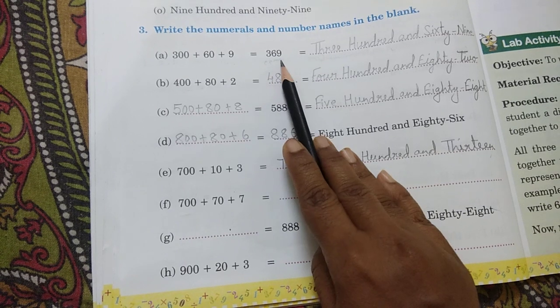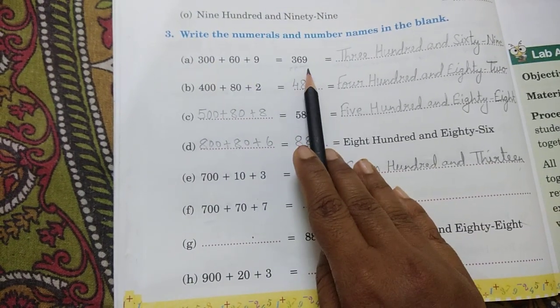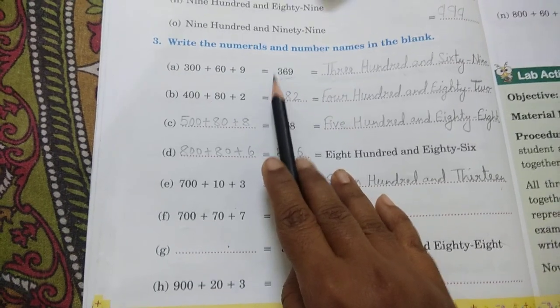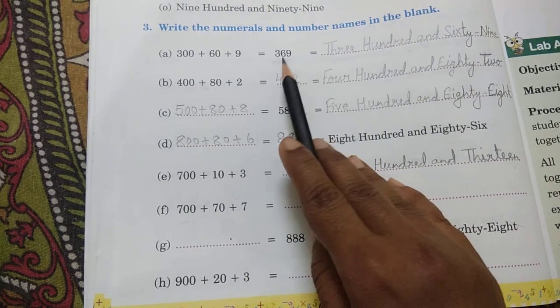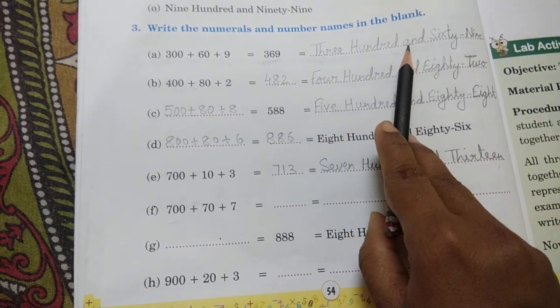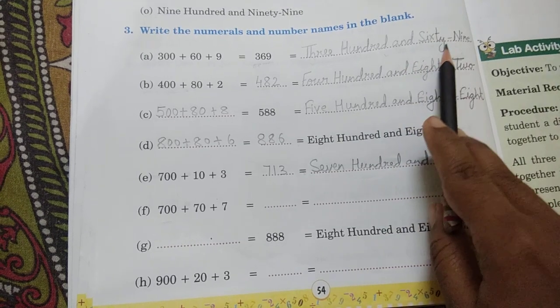So when we read this number, what is 369? See, the next number is 6, this number is 9, this number is 369. The number name spelling - how do we read this number? 300 in the hundreds place is 300 and 69 is 69. This number is three hundred and sixty-nine.